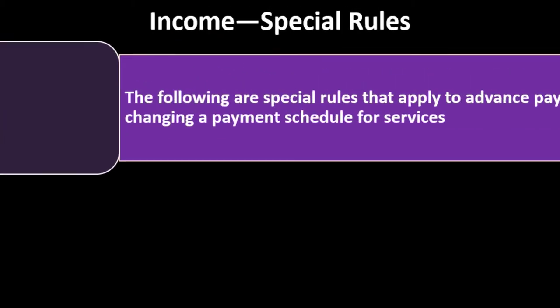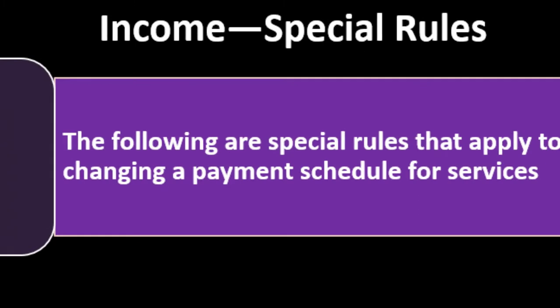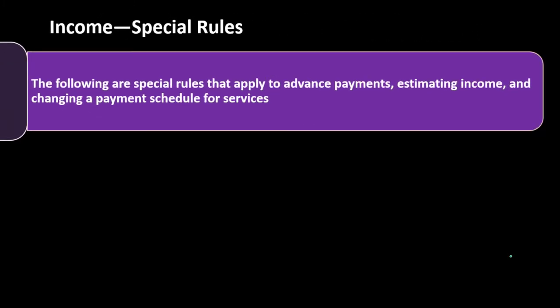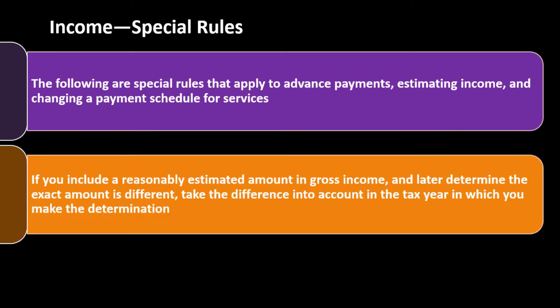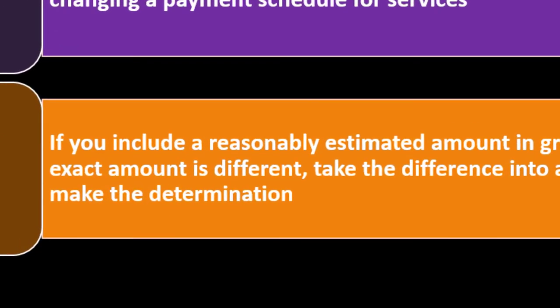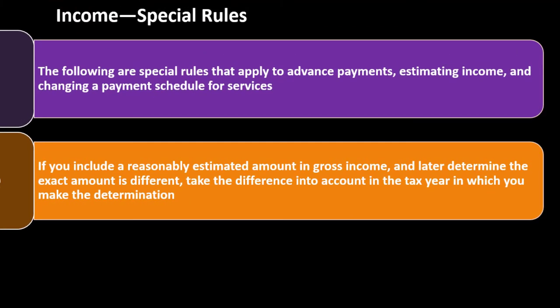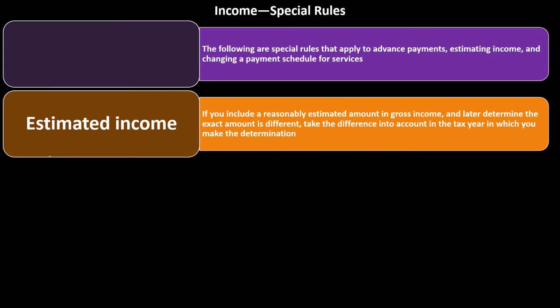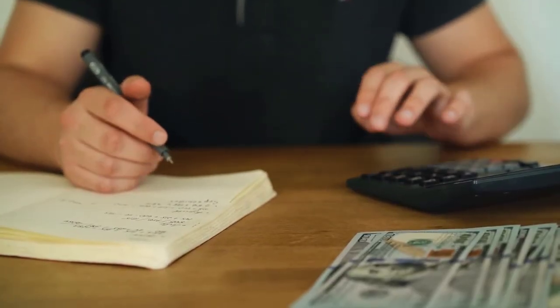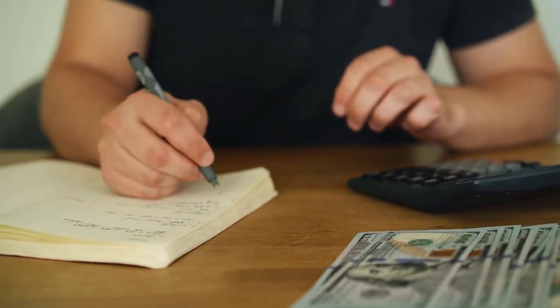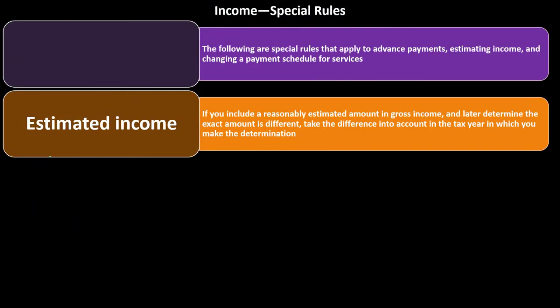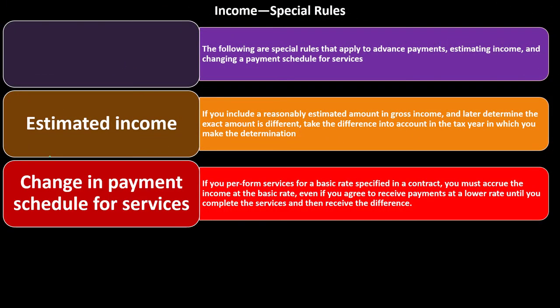Special rules apply to advanced payments, estimated income, and changing a payment schedule for services. On estimated income: if you include a reasonable estimate amount in gross income and later determine the exact amount is different, take the difference into account in the tax year in which you make the determination. So if you made an estimate, do you need to go back and change it in the prior year if it changed in the following year? No — usually you go forward and change it in the following year.